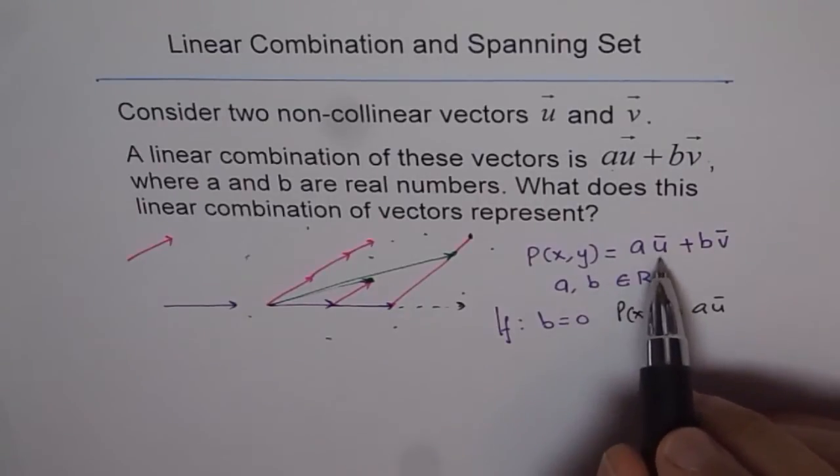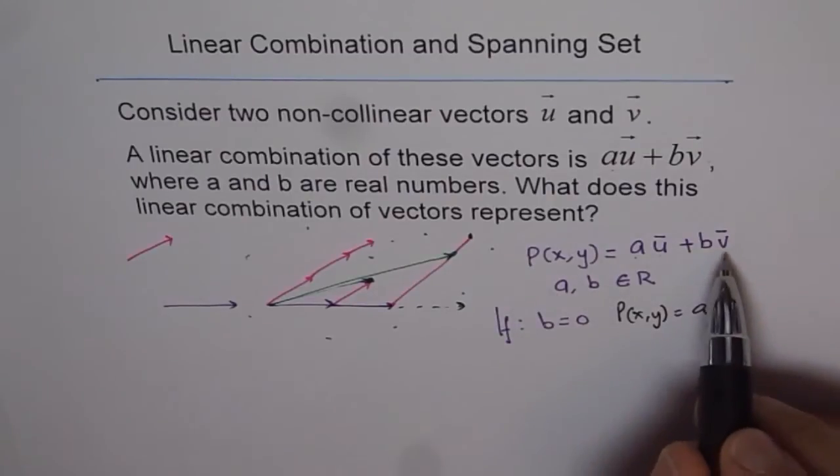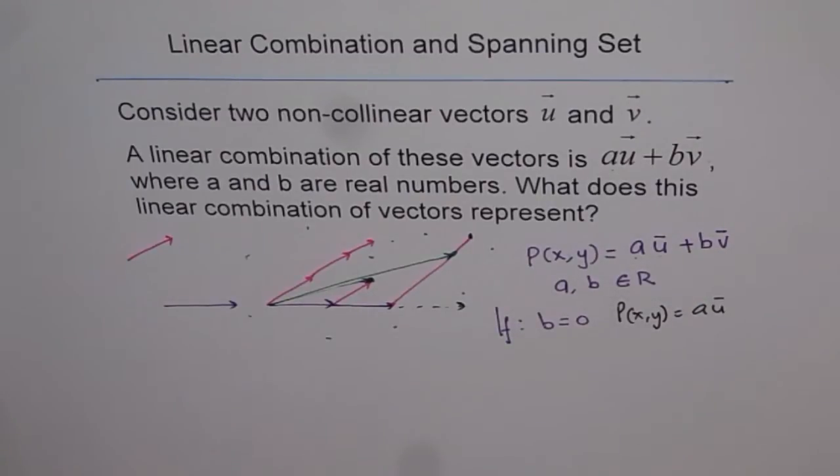And if a is 0, then p will be collinear with vector v. So that is another thing which we will soon learn.